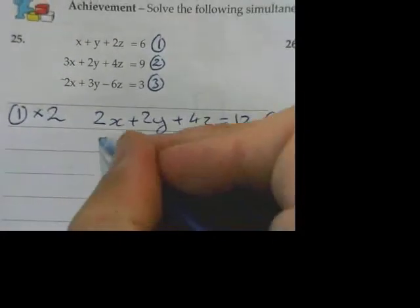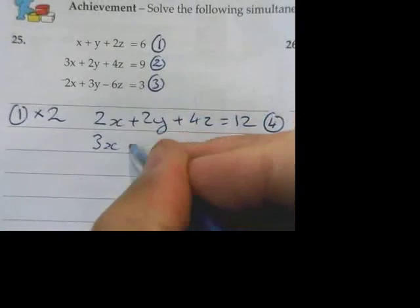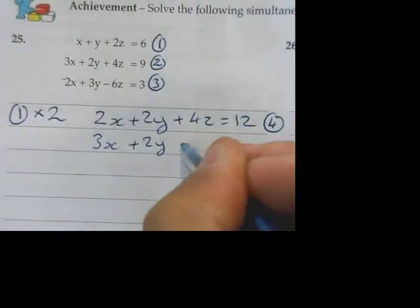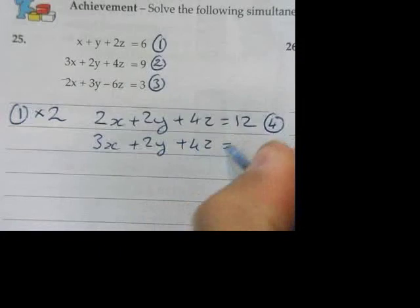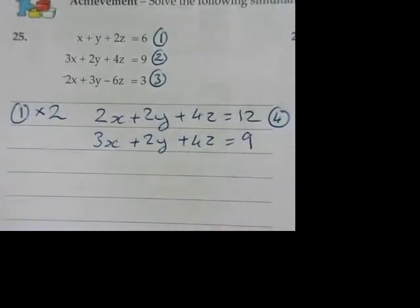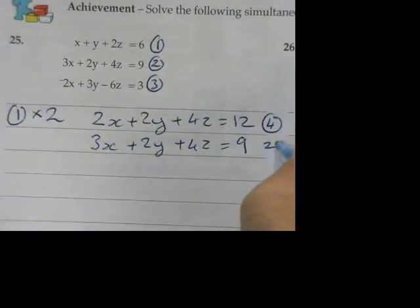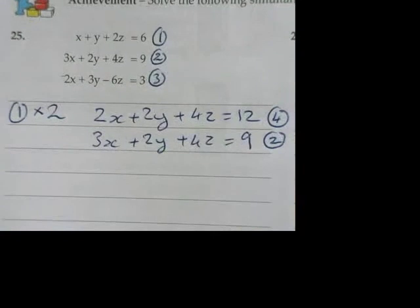Now contrasting that with equation number three, 3x plus 2y plus 4z equals nine. That's just equation number two, sorry. I want you to look at the way I'm labeling it as well, and the way I'm writing it down. It's not essential, but it's a good idea.